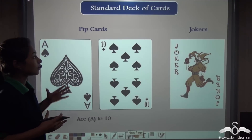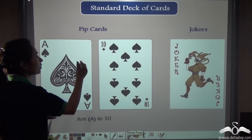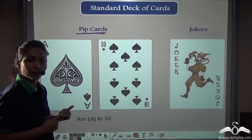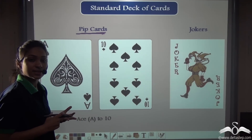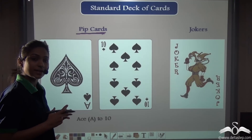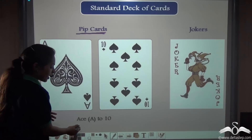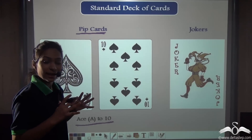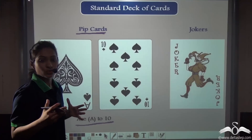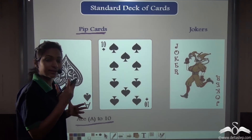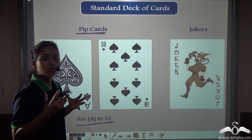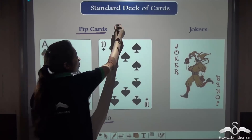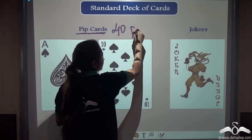The other cards, leaving aside the face cards, are known as Pip cards. They are the Ace, 2, 3, 4, 5, 6, 7, 8, 9 and 10. So the cards from Ace to 10 are known as Pip cards, and there are 10 Pip cards in each suit. With 4 suits and 10 Pip cards in each, 10 into 4 gives us 40 Pip cards in total.